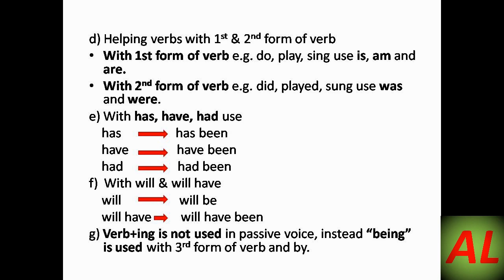The last rule is about the continuous form. In active voice sentences using verb + ing — for example, 'I am doing work' or 'he is driving car' — when changed to passive voice, the '-ing' is removed from the verb, the verb changes to its 3rd form, 'by' is added after it, and the word 'being' is added before the verb.